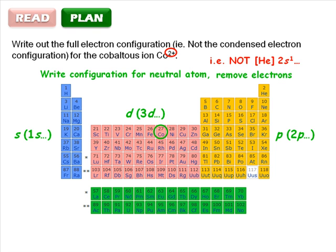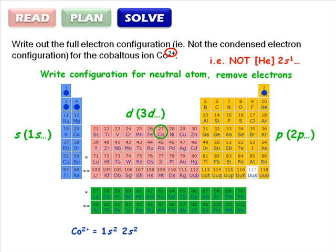Okay, now solve. We get 1s2, 2s2, 2p6, 3s2, 3p6, 4s2, and 3d7 for the neutral atom.